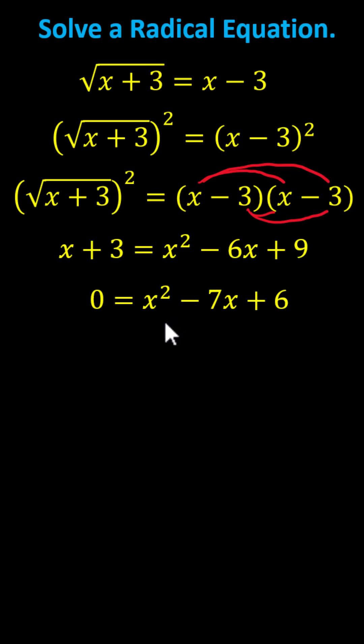Now we can solve by factoring. The right side factors into two binomial factors, where we have x and x in the first positions, because x times x equals x squared. The factors of positive 6 that add to negative 7 are negative 6 and negative 1, giving us a factor of x minus 6 and a factor of x minus 1.